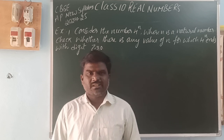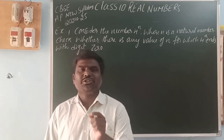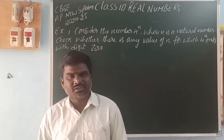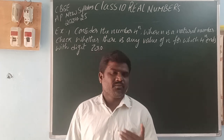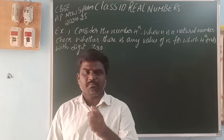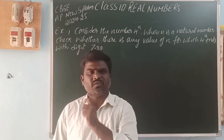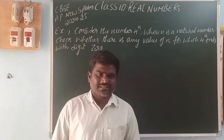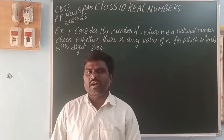For example, 20 ends with a digit 0. So 20 is a multiple of 10, and you can write 20 as 2 into 2 into 5 using the prime factorization method. For example, 50 ends with digit 0 — you can write it as 2 into 5 into 5. So if a number ends with a digit 0, it is a multiple of 10, or its prime factorization contains both 2 and 5.